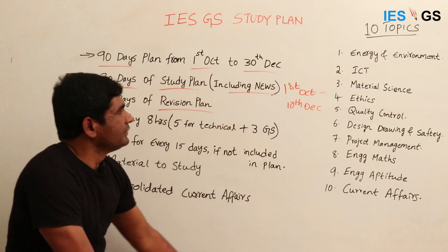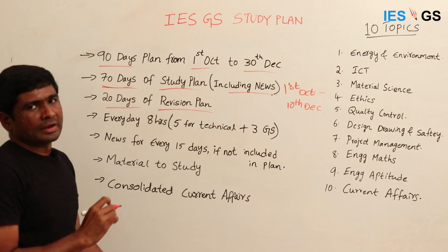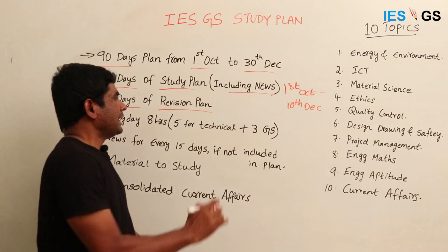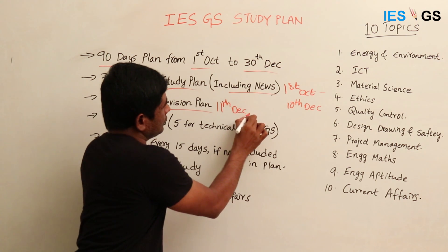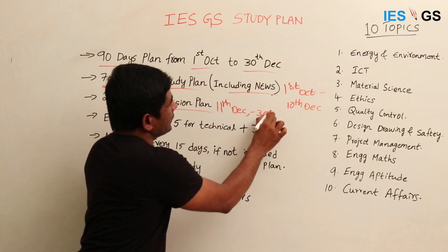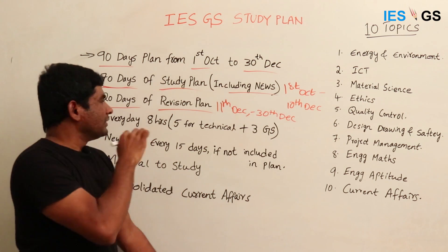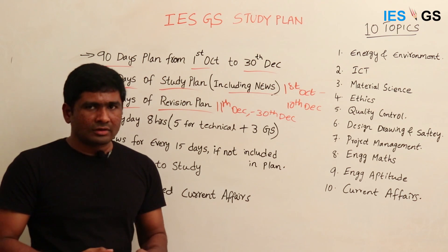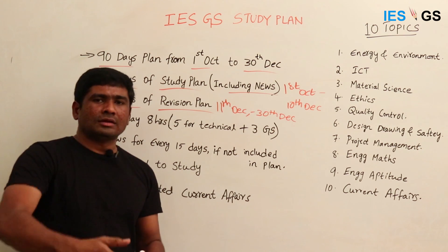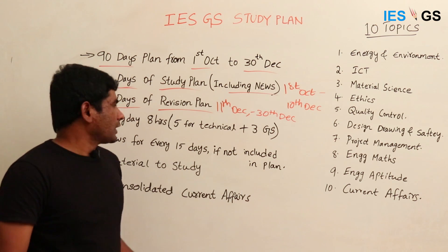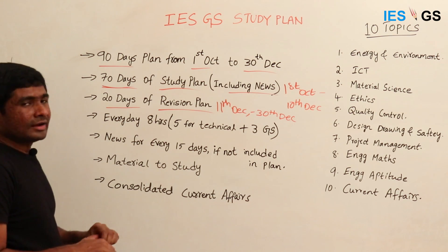After completing the 70-day study plan, the remaining 20 days form the revision plan, running from 11th December to 30th December. In the revision plan, immediately after the completion of every topic, we will be conducting one detailed quiz on that particular topic.